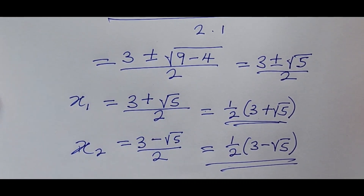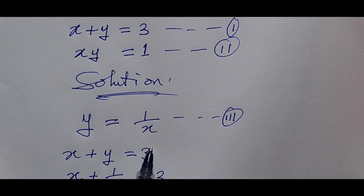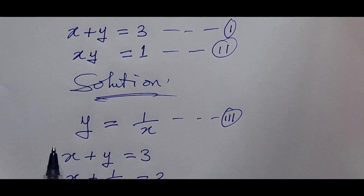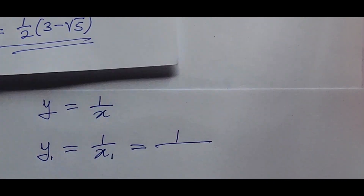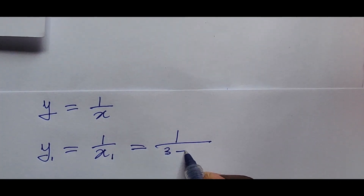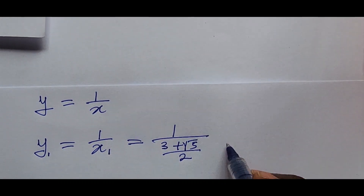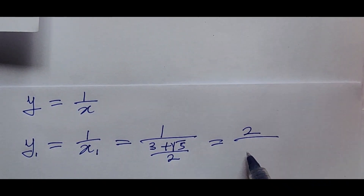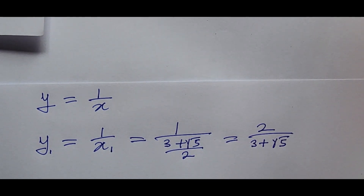Getting y₁ and y₂ is easy. Looking at equation three, we've already made y the subject of the formula. So we substitute x₁ and x₂ into the equation. From equation three, y₁ equals one over x₁. Substituting x₁, this gives us one over bracket three plus square root of five all over two, which is the reciprocal, giving us two over three plus square root of five. We cannot leave it in this format — we apply the rule of surds, which says we must rationalize the denominator.